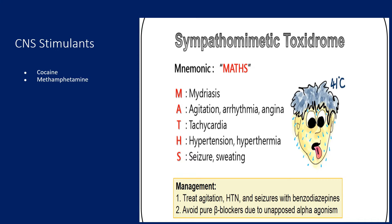CNS stimulants such as cocaine and methamphetamine are going to cause the sympathomimetic toxidrome — basically everything is up: heart rate's up, blood pressure's up, pupils are big. The main management of these is supportive care, which is what you're going to be limited to at the BLS level. At the ALS level, you can use benzos for agitation, so you might need ALS to help you if they're really amped up and agitated.